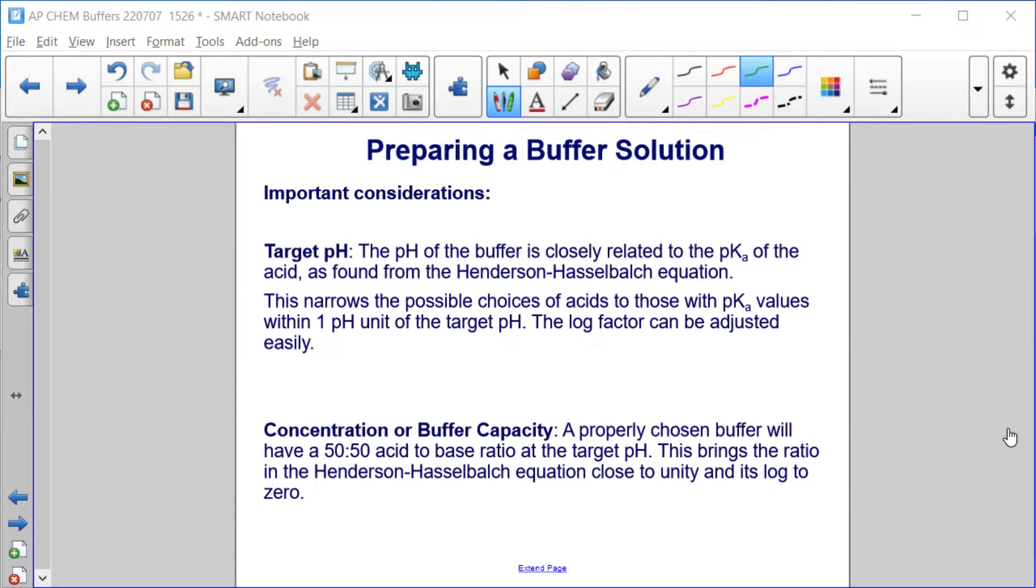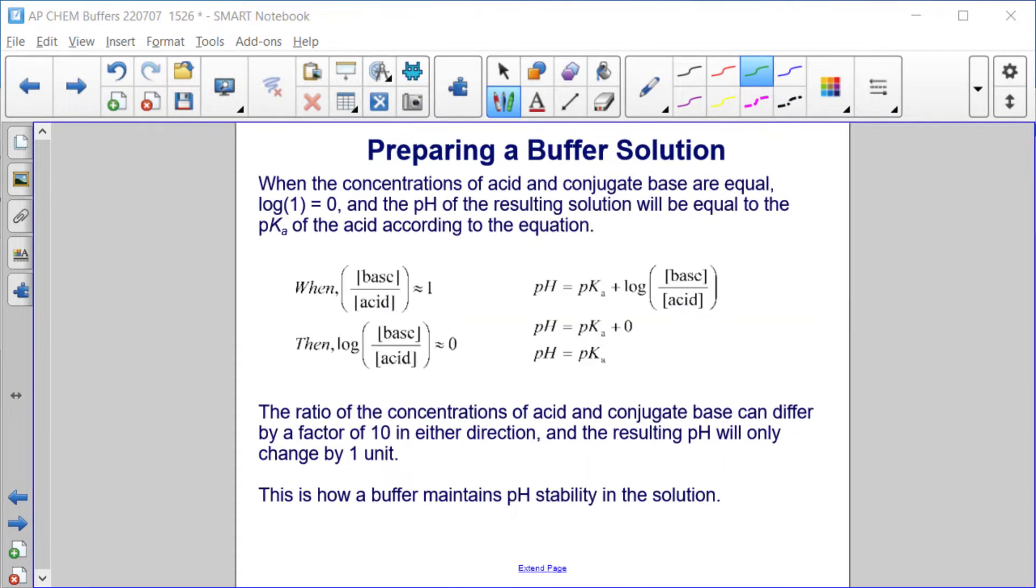Concentration or buffer capacity. A properly chosen buffer will have a 50-50 acid to base ratio at the target pH. This brings the ratio in the Henderson-Hasselbalch equation close to unity and its log to zero. When the concentrations of acid and conjugate base are equal, so when this ratio is approximately one, then the log of that one is approximately zero and the pH of the resulting solution will be equal to the pKa of the acid according to this equation.